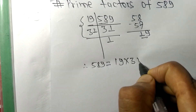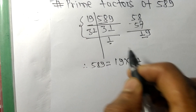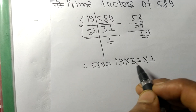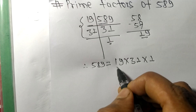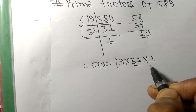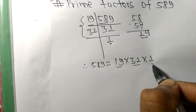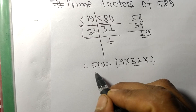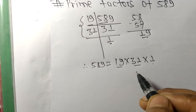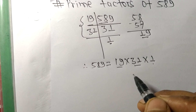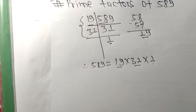So 19, 31, and 1 are the prime factors of 589. That's all for today, and thanks for watching.